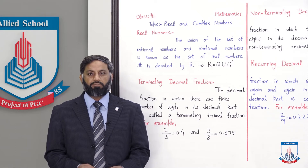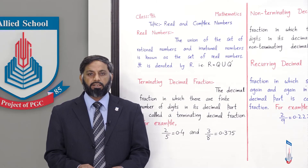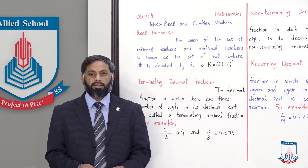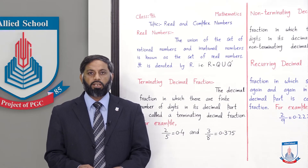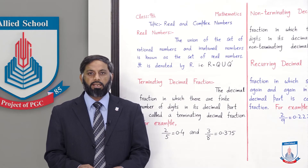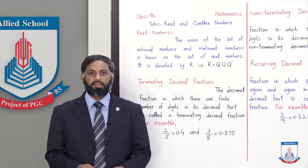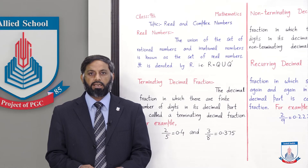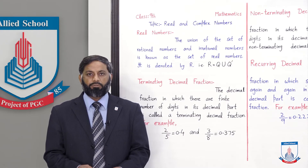For example, 2/3 اور 4/7 are called rational numbers. وہ numbers جن کو p over q کی form میں نہیں لکھا جا سکتا وہ irrational numbers کہلاتے ہیں۔ For example, √2, √5 — ایسی square roots جن کا result whole number نہ ہو، ان کا remainder کبھی 0 نہیں آئے گا۔ اس کے علاوہ π بھی ایک irrational number ہے۔